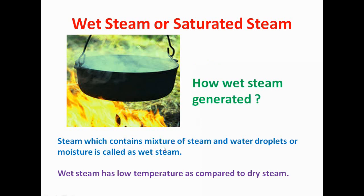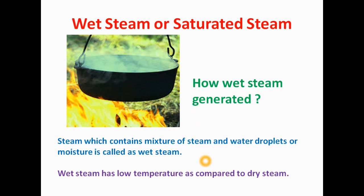Wet steam is a steam which contains a mixture of steam and water droplets or moisture. When we are heating water in the boiler, at 100 degree Celsius this water starts to boil and gets converted into steam. This steam contains some water droplets and its temperature is very low, close to 100 or 120 degree Celsius.